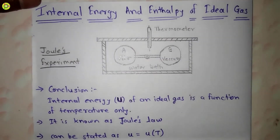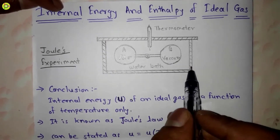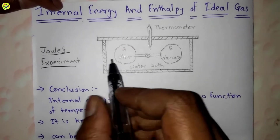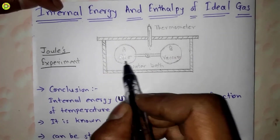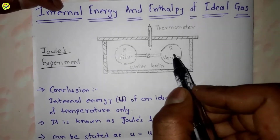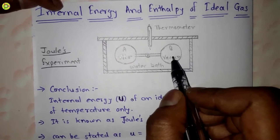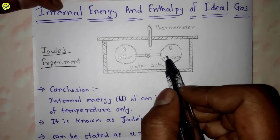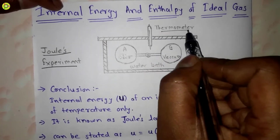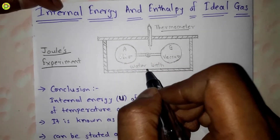This is an insulated container which contains water. Tank A is one tank which has air, and tank B is another tank which does not have any medium — it is evacuated, meaning it has vacuum.